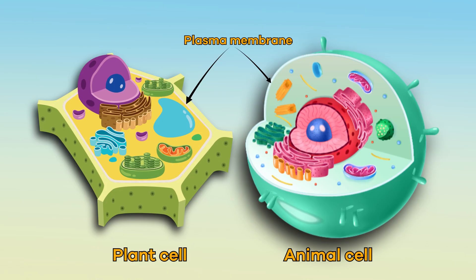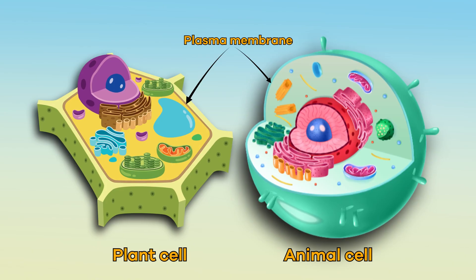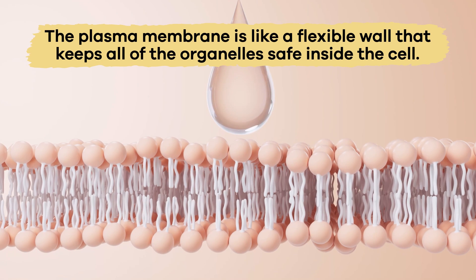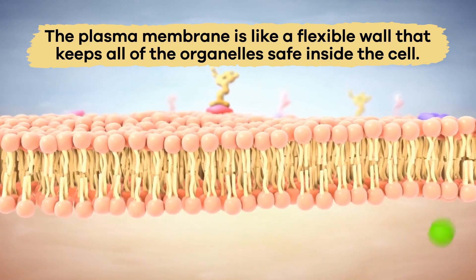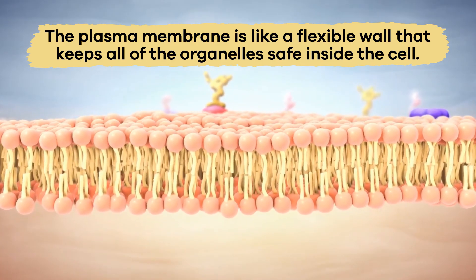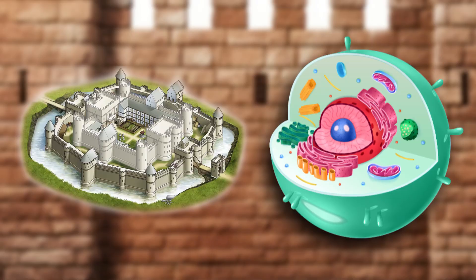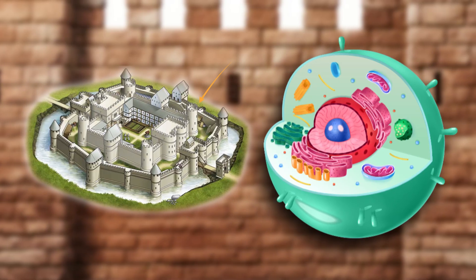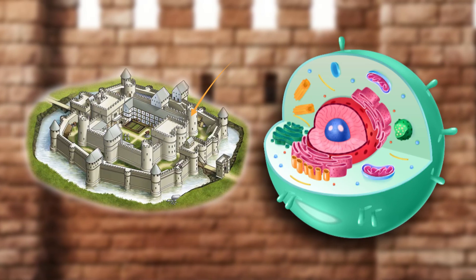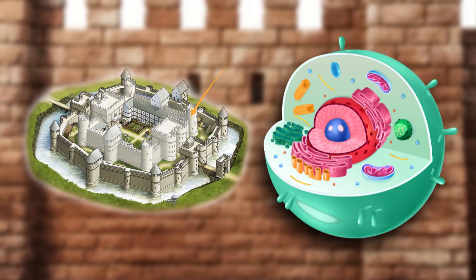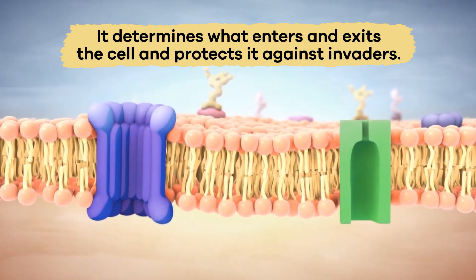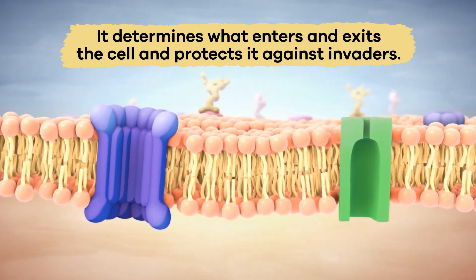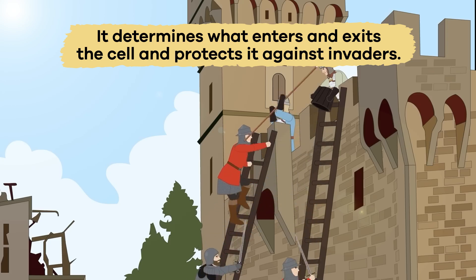The plasma membrane, or cell membrane, is on the outside of the cell. It is like a flexible wall that keeps all of the organelles safe inside the cell. The plasma membrane is like a castle wall with guards ready to defend its occupants. It determines what enters and exits the cell and protects it against invaders.